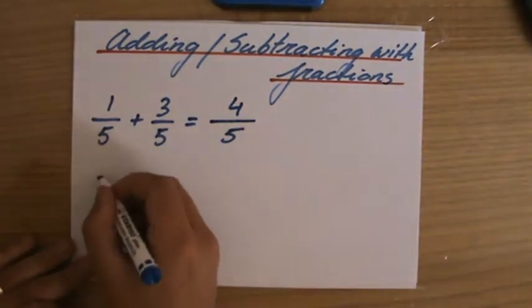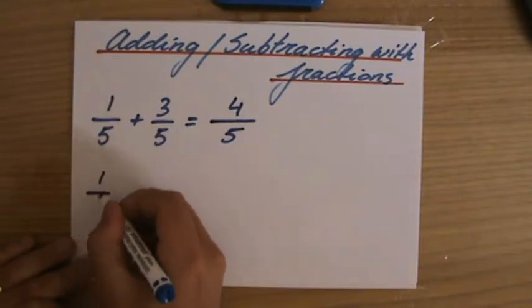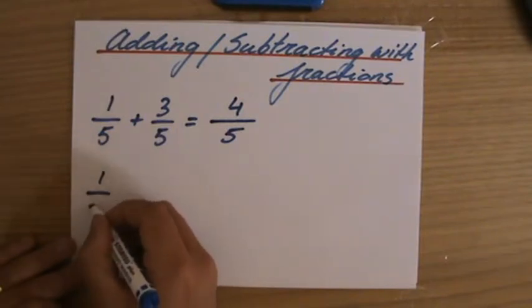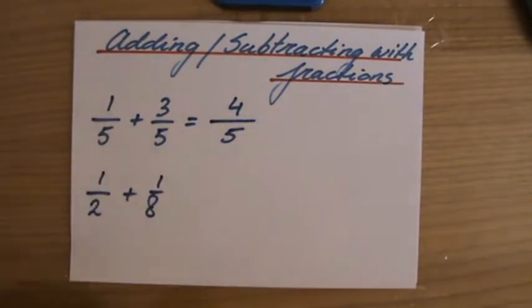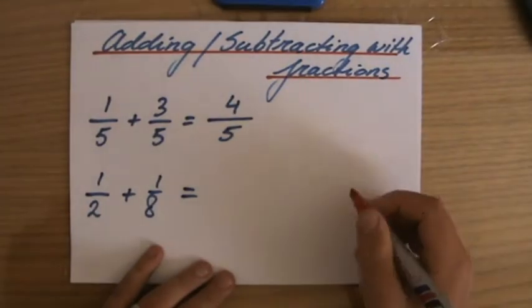But what happens if I have, for instance, 1 over 2 plus 1 over 8. I have 1 half and 1 over 8. And how much does that equal to? Now, that doesn't equal to 2 over 10, as some of you might would like to say. Because I've shown you in a video why, in a previous video.